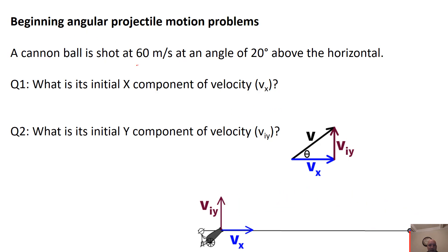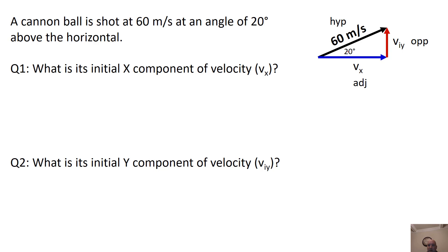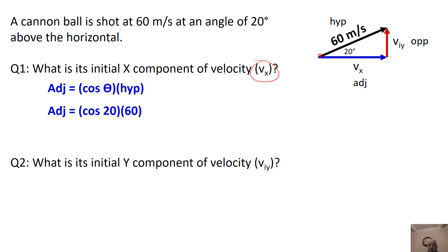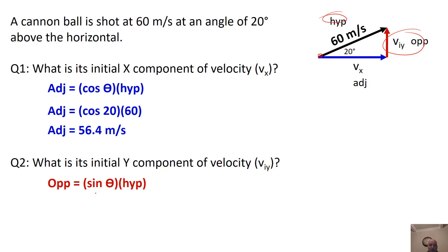For the first type of problem, you have a cannonball shot at 60 meters per second at 20 degrees above the horizontal. We make a triangle with 60 on the hypotenuse and the angle at the origin. For VX (adjacent over hypotenuse), we use cosine: cos(20°) × 60 = 56.4 m/s. For VIY (opposite over hypotenuse), we use sine: sin(20°) × 60 = 20.5 m/s. This information will be used for the rest of these problems.